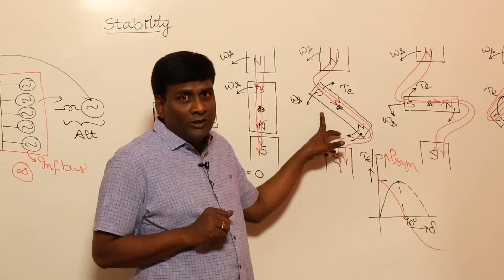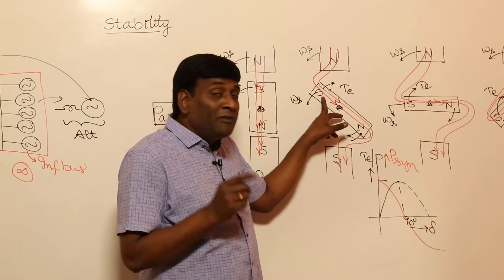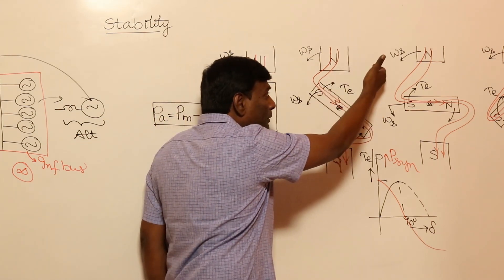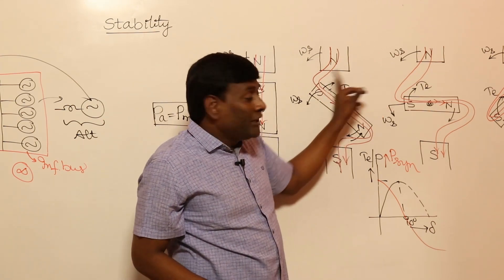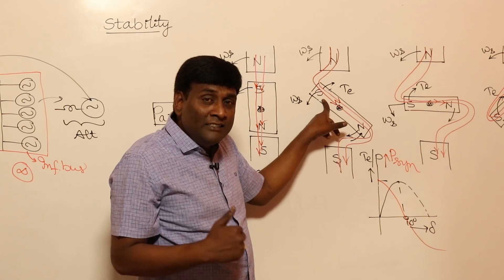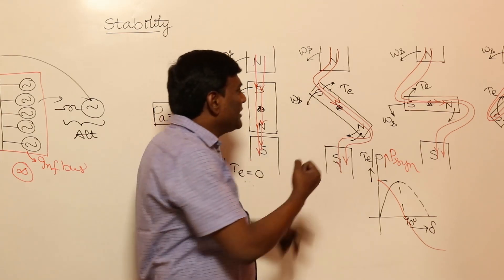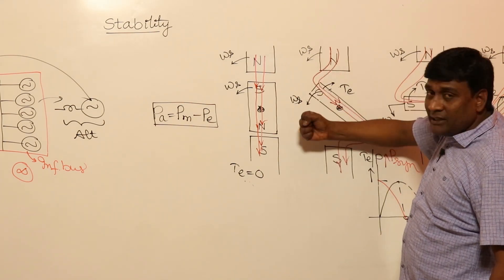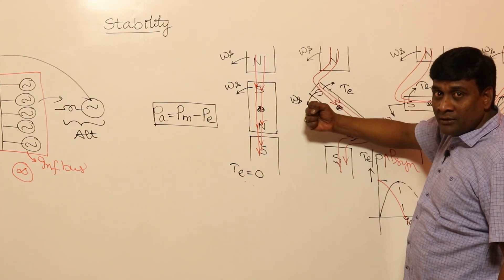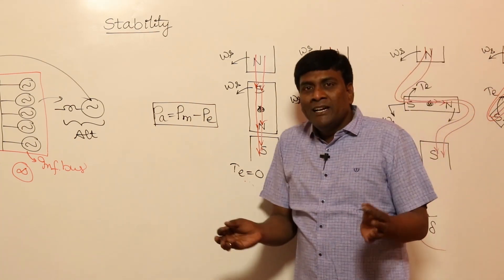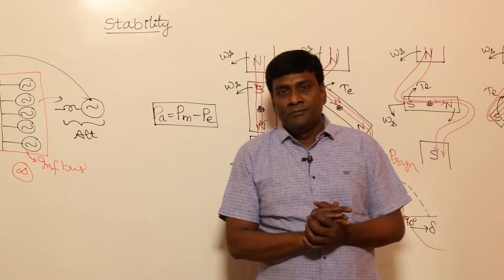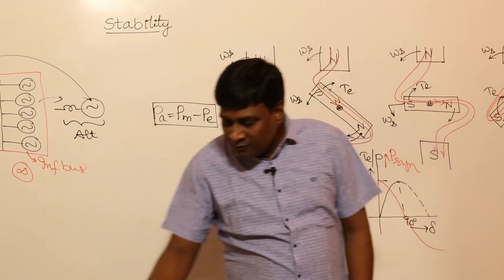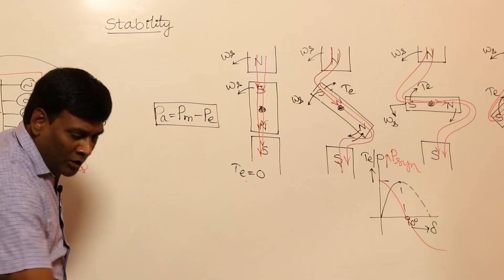If I reduce field current, it becomes weak pull. But prime mover input power is the same, so back torque must be the same. To maintain same back torque with weaker pull, delta must be increased. So inside the machine, if something happens — like changing field current — rotor swinging will definitely occur.